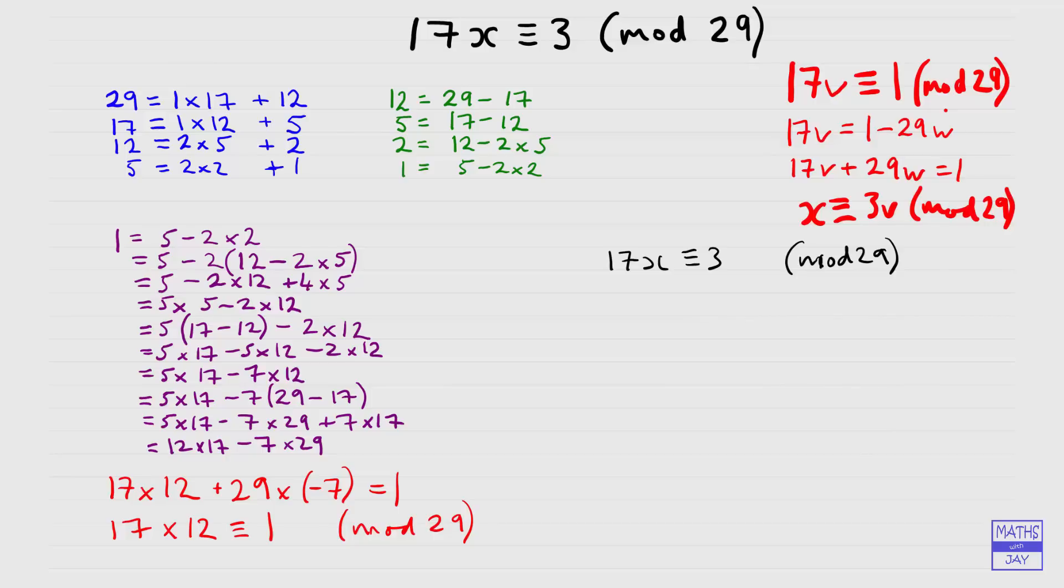So let's just write down the original problem again. So we've got 17x is congruent to 3, and now let's multiply both sides by 12. And the important thing is we have just found that 12 times 17 is congruent to 1, so on the left-hand side we're left with x. On the right-hand side 12 3s, well they're 36. But as we're in mod 29 we can subtract 29 from that, or any other multiple as necessary here, we just need to take off 1 times 29, and we're left with 7.